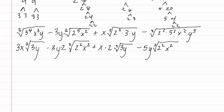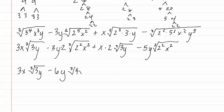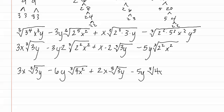Now we must multiply anything out front of each of these radicals. The first radical is three x with the cubed root of three y. Next, we have a three and a two, giving us negative six y with the cubed root of four x squared. Then we have an x and a two, which gives us two x cubed root of three y. Finally, negative five y with the cubed root of four x squared.